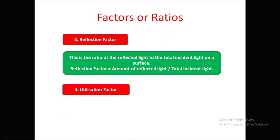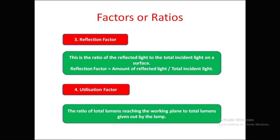Utilization factor is the ratio of total lumens reaching the working plane to total lumens given out by the lamp. Some energy from the lamp is wasted before reaching the working plane, and that ratio is the utilization factor.